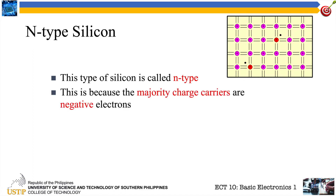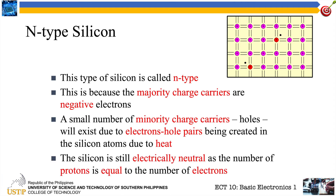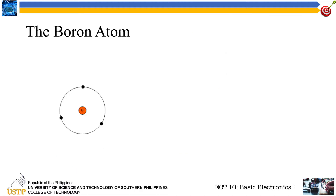This type of silicon is called n-type because the majority charged carriers are negative electrons — n for negative. A small number of minority charged carriers or holes will exist due to electron-hole pairs being created in silicon atoms due to heat. If we apply more phosphorus into our silicon material, we'll have even more electrons available for conduction.